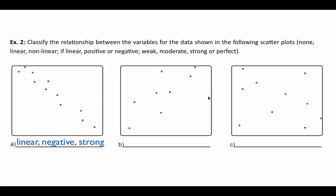For graph B, the data has a general upward shape in a linear pattern, but not as tight as graph A. I would say linear, positive, and maybe moderate — or you could even argue weak. For graph C, you can't really draw an oval around the cloud in any meaningful way — there's no discernible pattern. Without mathematical analysis, I'd say there's no correlation here. For graph D, there is a pattern, but it looks like a curve, not a straight line, so this would be nonlinear.